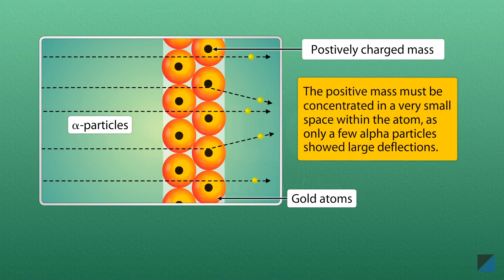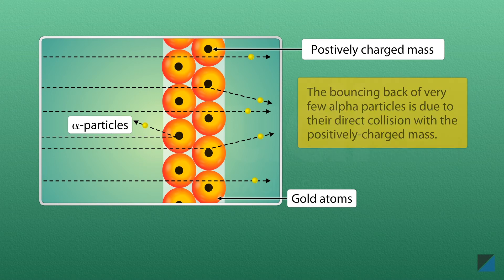This positive mass must be concentrated in a very small space within the atom, since only a few alpha particles showed large deflections. The bouncing back of very few alpha particles with a deflection of 180 degrees indicated a direct collision with the positively charged mass of the atom.